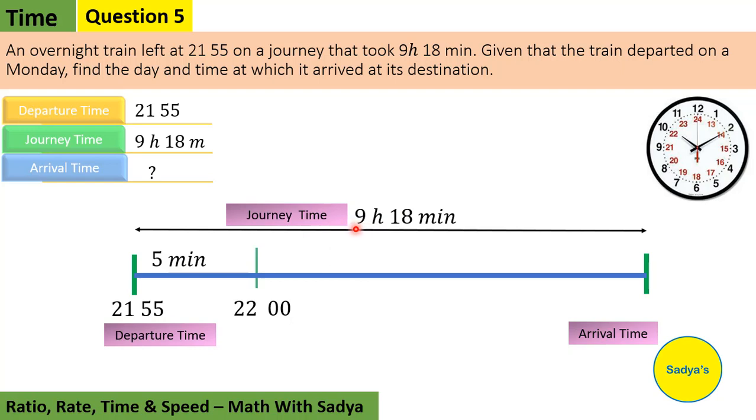Now we have to cover 9 hours. Let's see 9 hours. It's 22, then 23, then 24. After 24, the next day starts: 1, 2, 3, 4, 5, 6, 7. So this gives us 9 hours.